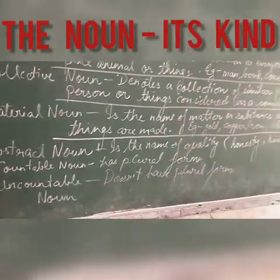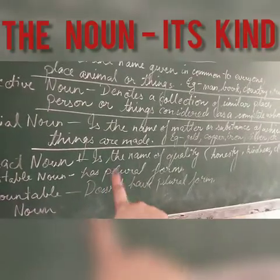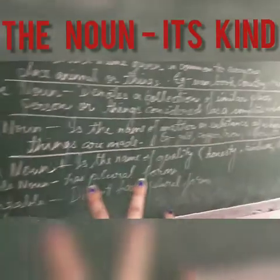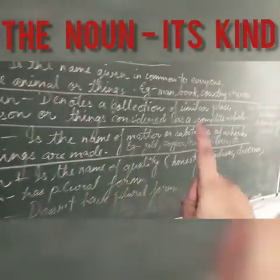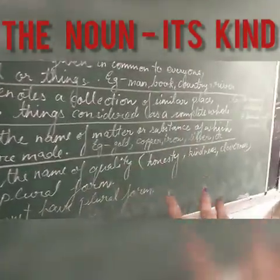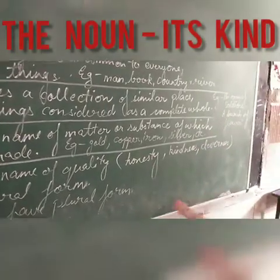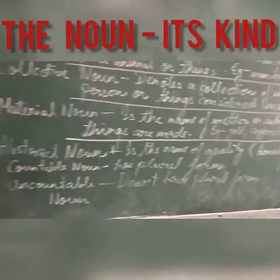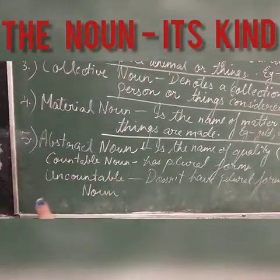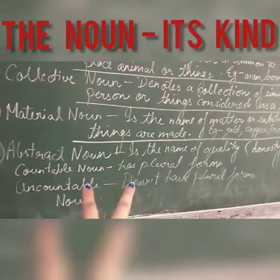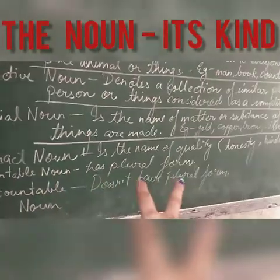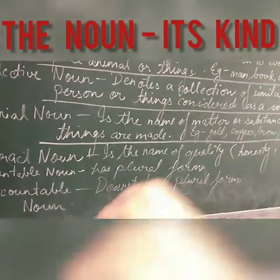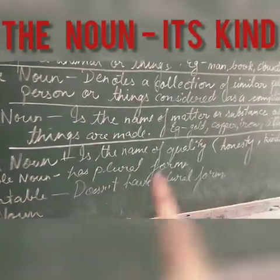Come to the fifth one, abstract noun. What is abstract noun? Abstract noun is the name of quality — honesty, kindness, cleverness. Abstract noun kya hote hai? Yeh aapke name of the quality bataate hai — honesty, kindness, cleverness. These are the examples of abstract noun. Abstract noun do noun mein divide hote hai — that is the countable noun and uncountable noun. Countable noun has a plural form that can be counted. Uncountable noun are those that cannot be counted — that is, doesn't have a plural form.